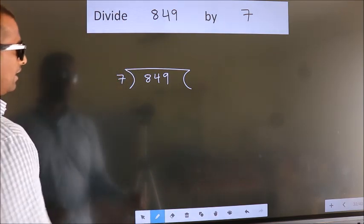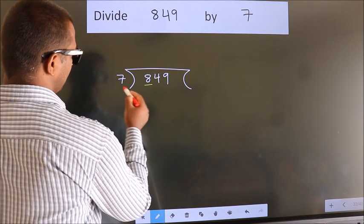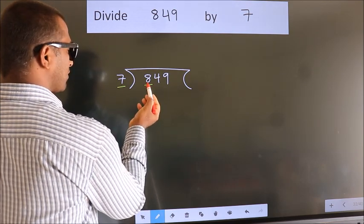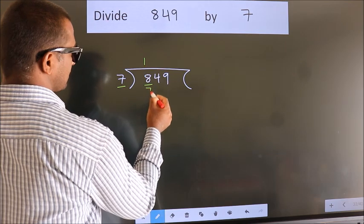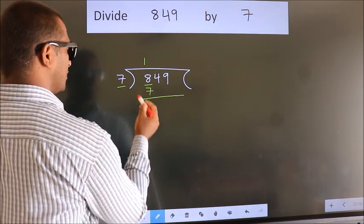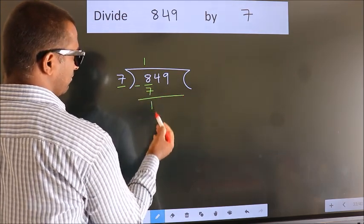Next. Here we have 8, here 7. A number close to 8 in 7 table is 7 times 1, 7. Now we should subtract. We get 1.